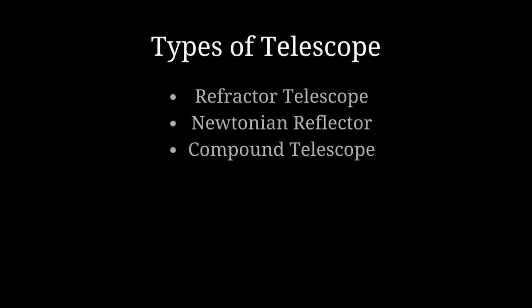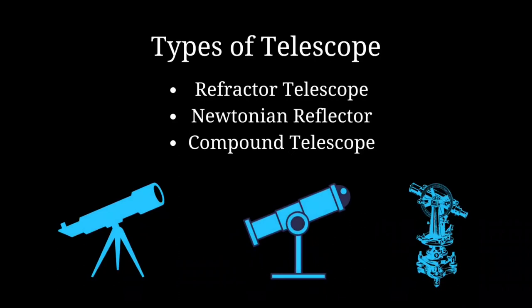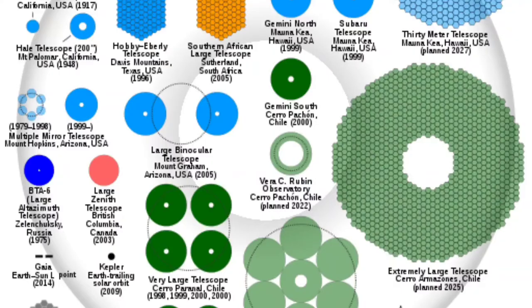Telescopes are available in three different types, which are known as the refractor telescope, Newtonian reflector, and compound telescopes. Telescopes work on the principle of a curved mirror or lens, and are used to focus the light from the sky. The bigger the mirror or lens, the more light the telescope can gather, and you can see a brighter and bigger image of a far-distance object.